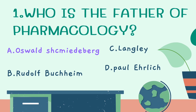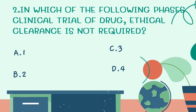Second question: in which of the following phases of clinical trial is ethical clearance not required? Options: Phase 1, Phase 2, Phase 3, Phase 4. The answer is Phase 4, which is post-marketing surveillance. Since the drug is already on the market, ethical clearance is not required. For other phases, we take volunteers and patients, so ethical clearance is required.